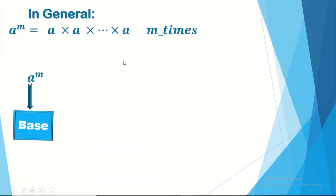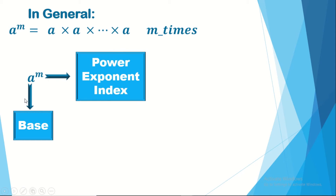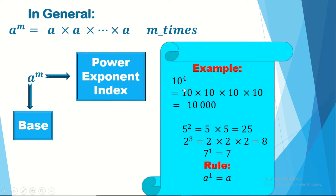The exponent is written up and to the right of the base, smaller than it. We also call it the index. It represents how many times we should multiply the base by itself. In general form: a to the power m means a times a, m times. For example, 10 to the power 4 is 10,000 — four zeros. 5 squared is 25, 2 cubed is 8, and 7 to the power 1 equals 7. The rule: a to the power 1 equals a.